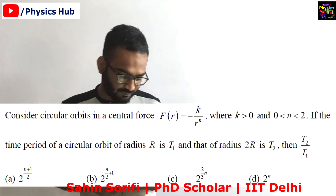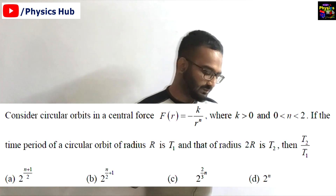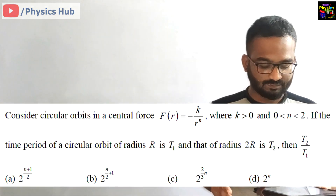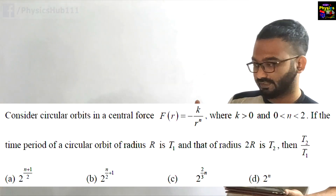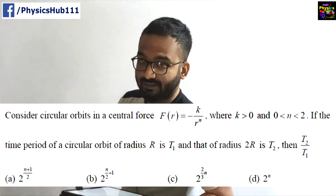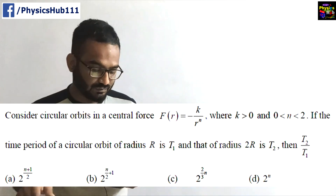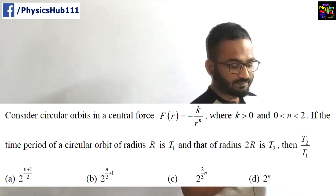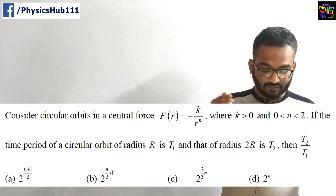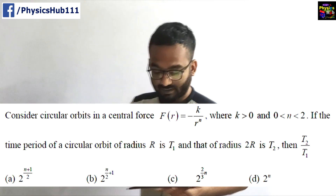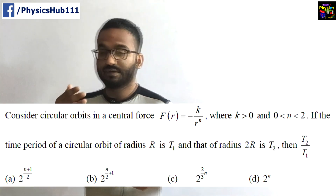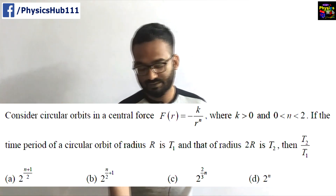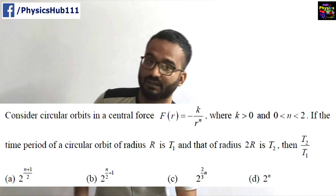The question reads like this: Consider circular orbits in a central force f(r) = -k / r^n, where k > 0 and n lies between 0 and 2. If the time period of a circular orbit of radius r is T1, and that of radius 2r is T2, then what is the ratio T2/T1?